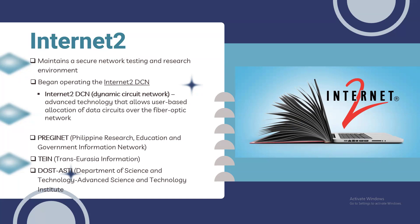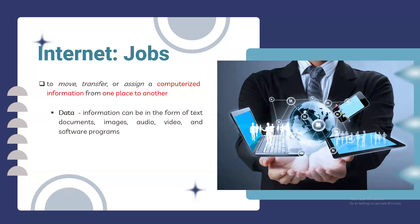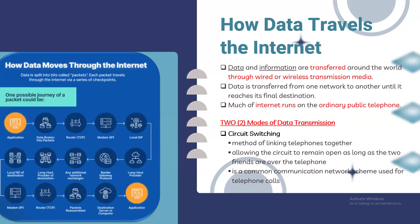The internet is still growing. As of January 2018, there were 4.021 billion users. For 2024, we have about 6 billion users — an increase of about 2 billion, partly driven by the pandemic. That 6 billion represents 67% of the total global population using the internet, because many jobs involve transferring computerized information from one place to another. Data transferred over the internet includes documents, images, text, audio, videos, and software programs.